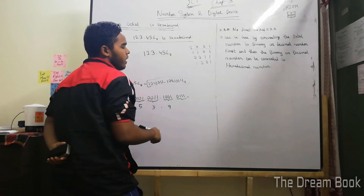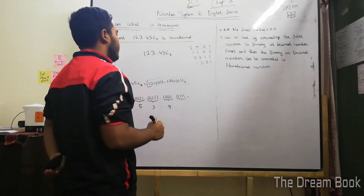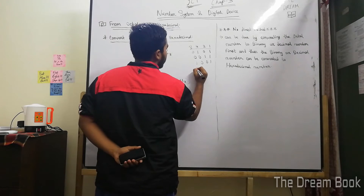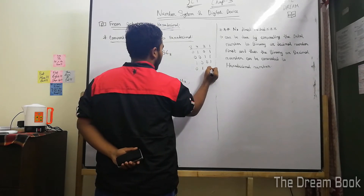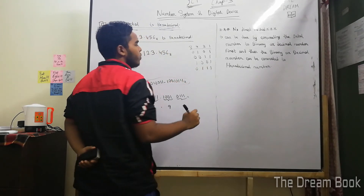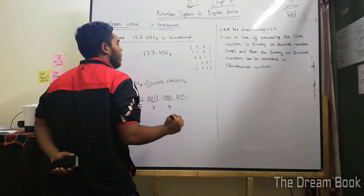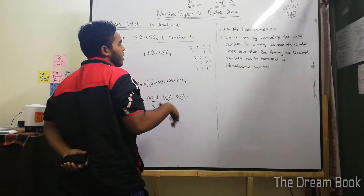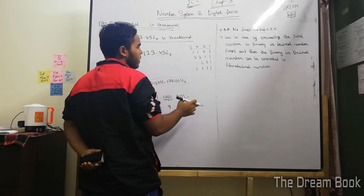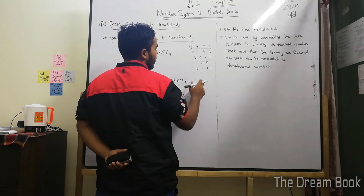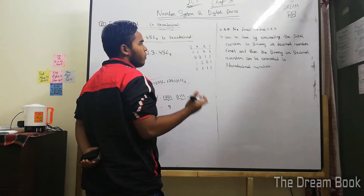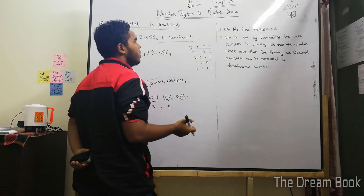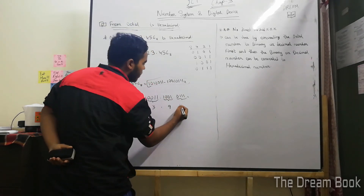And finally, we have 0, 1, 1, 1. So we have 4, 2, 1 all on, and we have 4 plus 2 plus 1, that is 7. So we have 7.